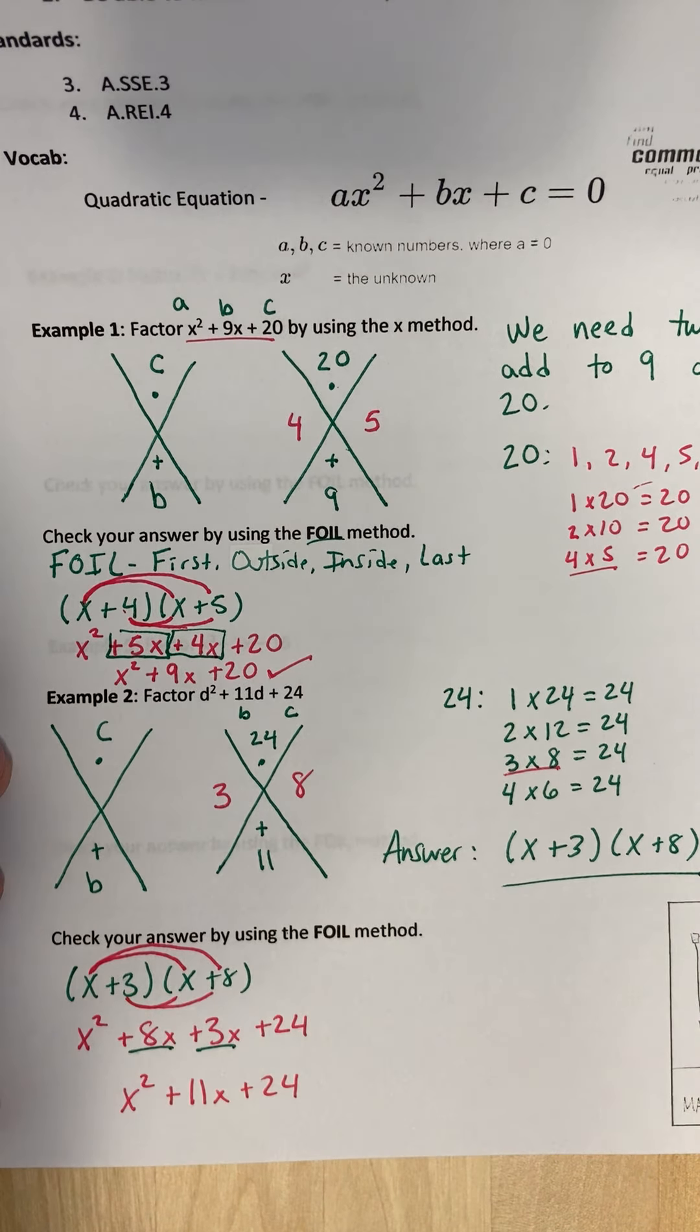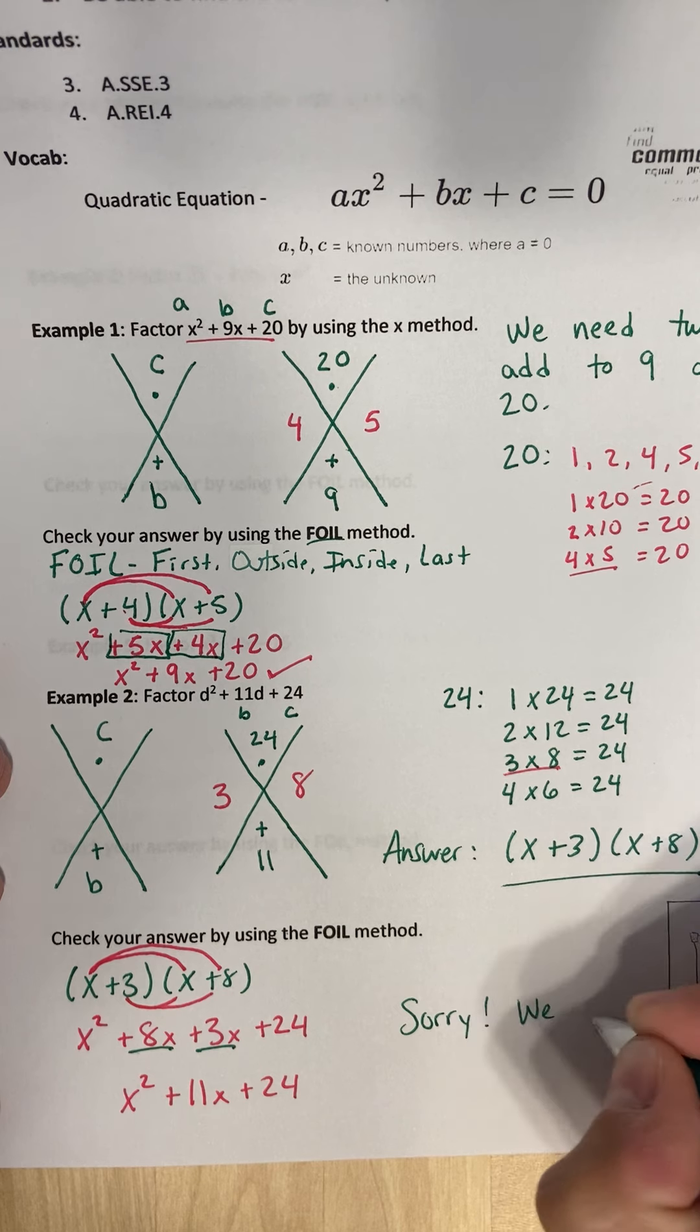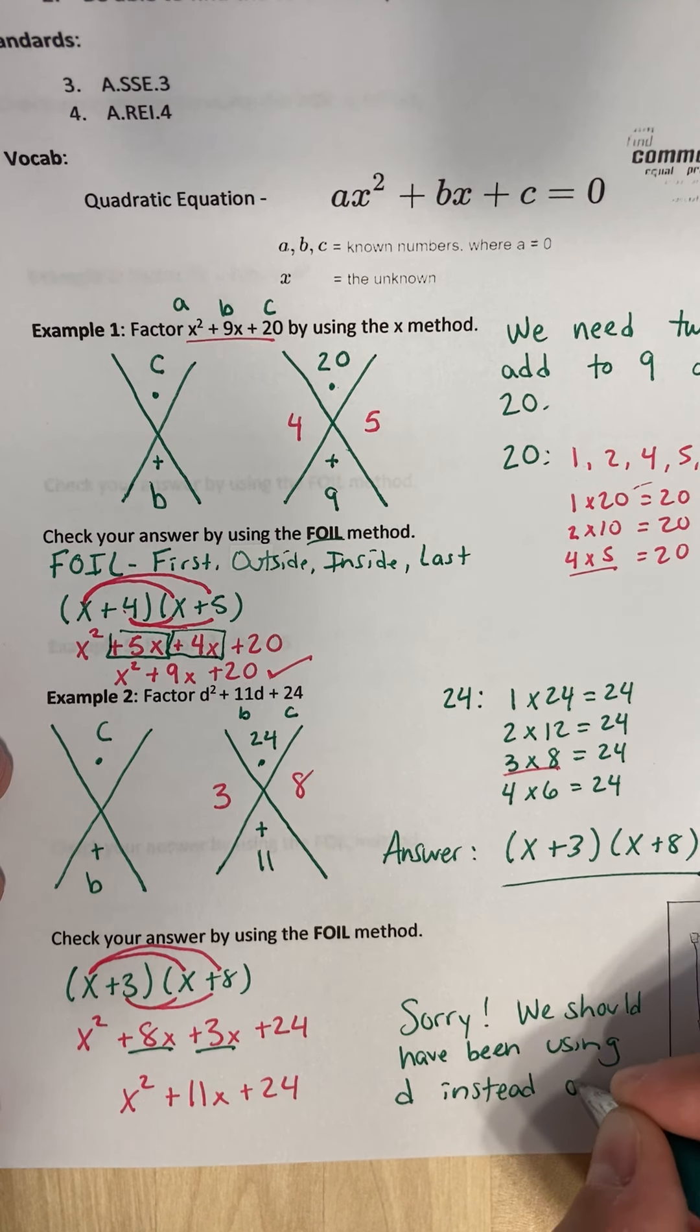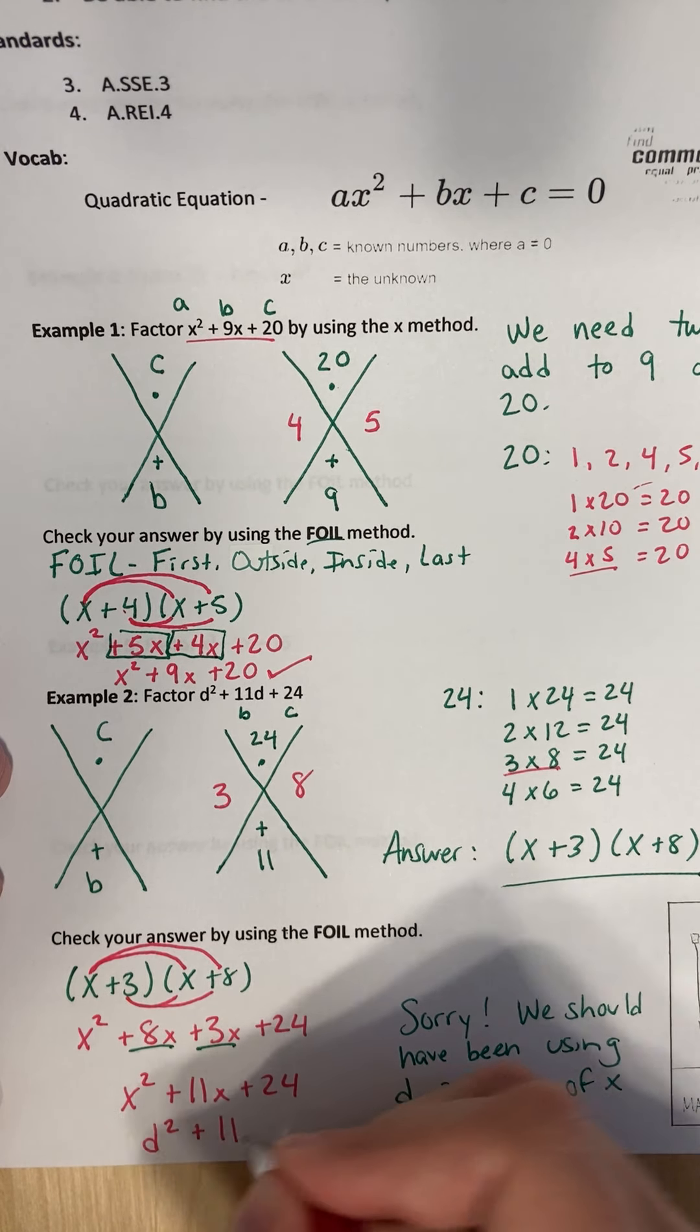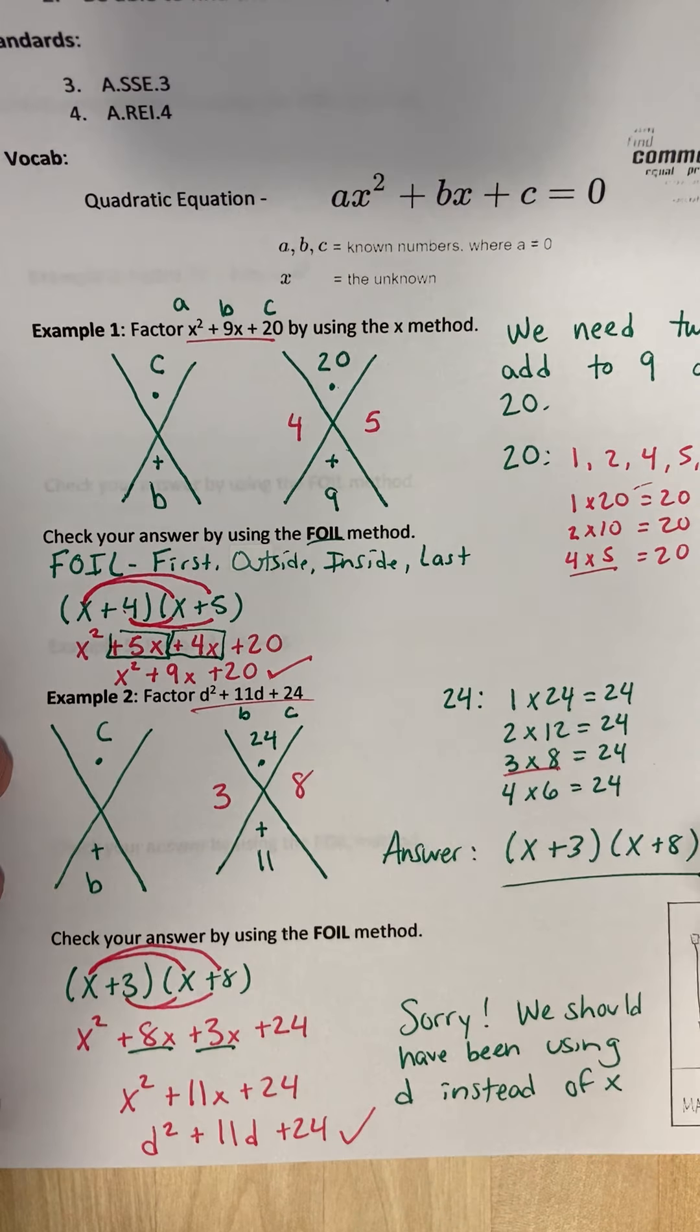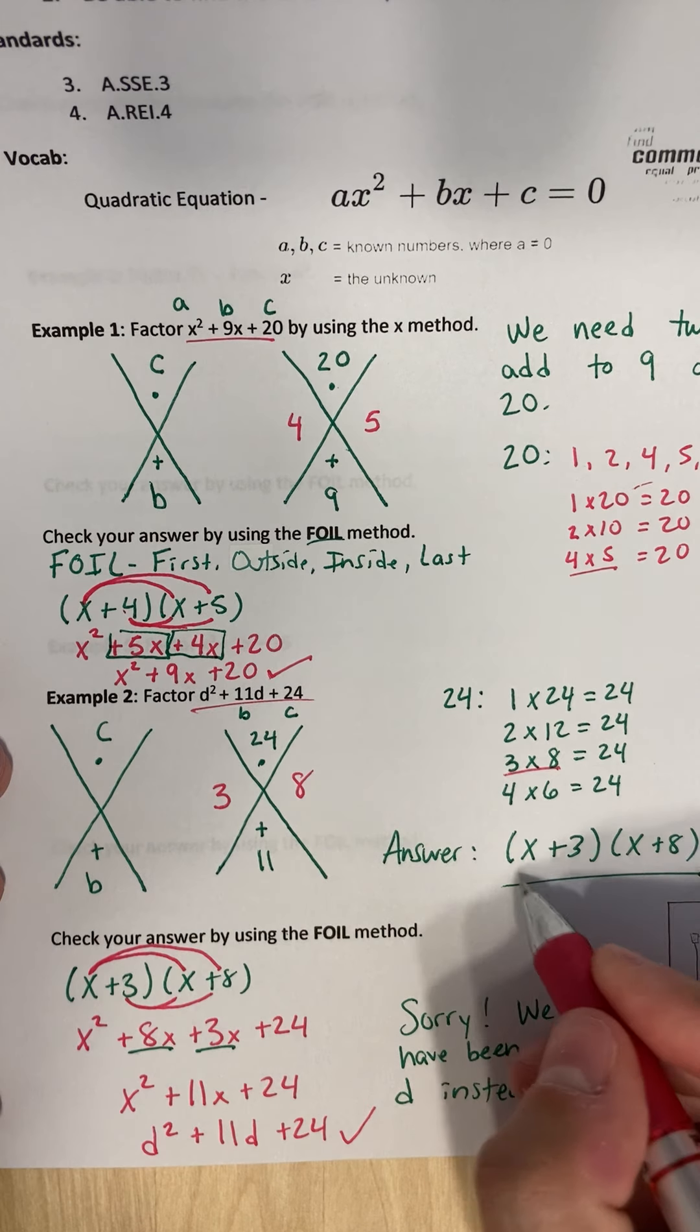Oh my goodness. I'm so sorry. I should have been using d this whole time. Sorry. We should have been using d instead of x. That's okay. We can just rewrite this. We'll rewrite the same thing as that. Yeah. It's just we did x's here instead. So just be careful. You want to use whatever letter that they write instead of x all the time. So d squared plus 11d plus 24. And that's what we started with. So you know that this is the right answer.